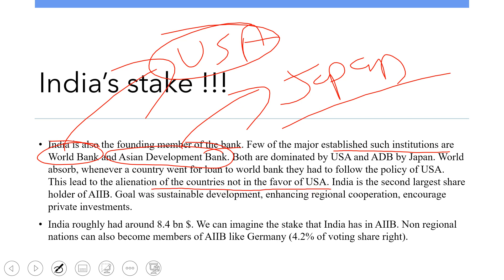India is the second-largest shareholder of AIIB and one of its founding members — first is China, second is India. The goal of AIIB is sustainable development, enhancing regional cooperation, and encouraging private investment. India has roughly around 8.44 billion dollars invested in it, reflecting its significant stake in AIIB.